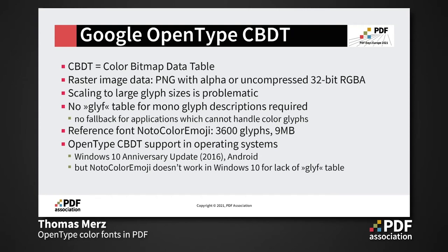Finally, Google invented their own format called CBDT — Color Bitmap Data Table. In principle it's similar to Apple's format; it also packs PNG images for the individual glyphs, but it's not as widely supported. The well-known Noto font family also includes an emoji font, Noto Color Emoji, which you can use if you want to take a look at this format.